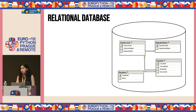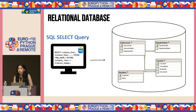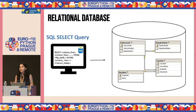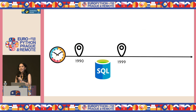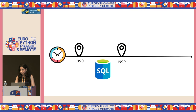In order to talk to a relational database, you would need something called a structured query language. You could write complex queries, and the database management engine is entirely capable of joining data from multiple tables and precisely giving you what you had asked for. For a time, relational databases were the perfect solution.